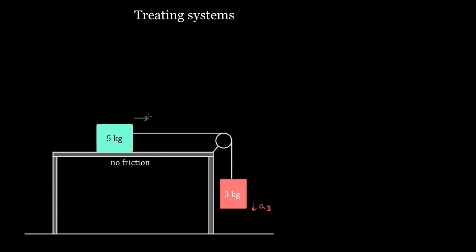A pulley is this part right here — a little piece of plastic or metal that can rotate, usually with a groove so that a string or rope can pass over it. It rotates freely so you can turn a horizontal tension on one side into a vertical tension on the other. If the pulley can spin freely and has basically no mass and no resistance to motion, then the tension on one side is going to equal the tension on the other side.